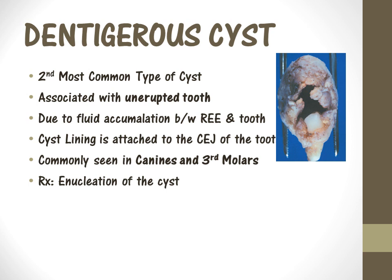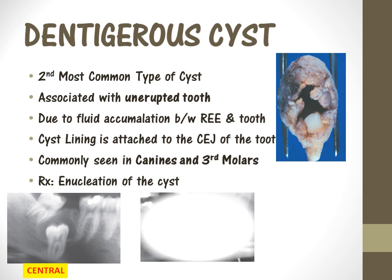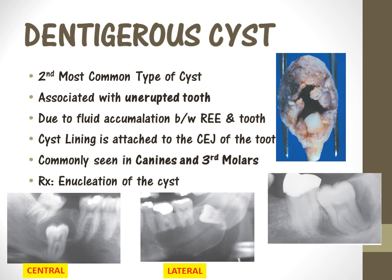The cyst lining is usually attached at the CEJ of the tooth. This type of cyst is most commonly seen in canines and third molars. The adequate treatment is enucleation of the cyst. There are three variations: the first is the central type, which covers from mesial CEJ to distal CEJ; the lateral type, which covers only one side of the tooth; and the circumferential type, which covers the entire tooth surface. Treatment is enucleation of the cyst along with the unerupted tooth.